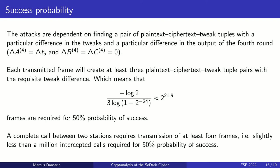For the attacks to work, a particular difference in the output of the third round must exist. Assuming good randomization properties, the probability of this is 2 to the power of negative 24. In the ALE standard, each transmitted frame contains at least three 24-bit words, meaning each frame provides three plaintext-ciphertext-tweak pairs with the required difference. Under these conditions, 2 to the power of 21.9 frames are required for 50% probability of success. Since a call between two ALE radios requires at least four frames to be transmitted between them, this translates to about a million intercepted calls for 50% probability of success.